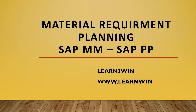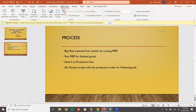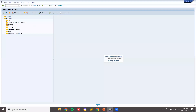Hello everybody, Swaminath here. Today we are going to see Material Requirement Planning - MRP run in both MM and PP, that is Material Management as well as Production Planning. The process I'm going to do is: buy raw material from the vendor by running MRP, then send it to the production line and get back the finished goods.